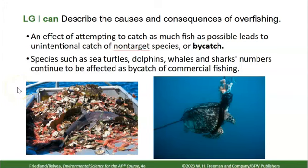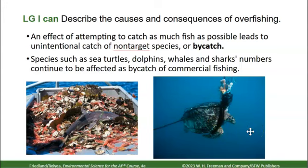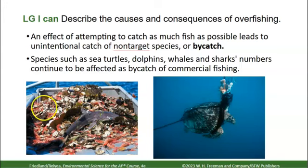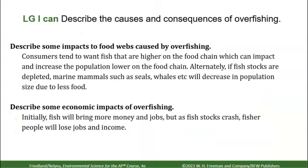One major problem with these fishing methods is catching non-target species, which we call bycatch. Sea turtles, for example, need to breathe air; if trapped in fishing line, they suffocate because they cannot get to the surface. Whales and dolphins also need surface air and lack gills. If you're fishing for crab and accidentally catch a shark, that's bycatch — things you don't mean to catch, can't sell, or that are illegal to keep.